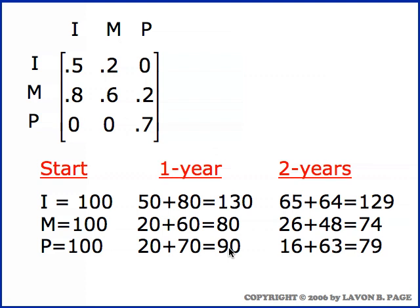In the older category, twenty percent of the one hundred matures age into that group — that's twenty — plus seventy percent of the one hundred older group, which is seventy, survive to give ninety in the older group at the end of the year.